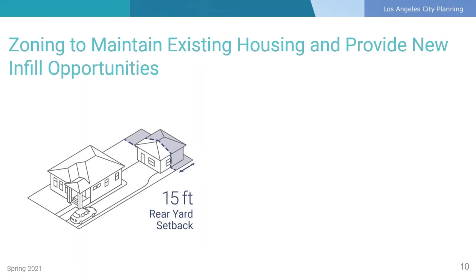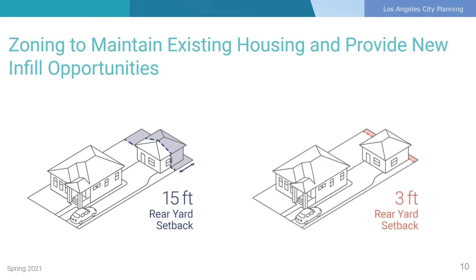Many residential properties in Boyle Heights are currently developed with a primary structure and a smaller secondary structure located close to or up to the rear property line. Under the existing zoning regulations, a 15-foot setback is required in most residential zones in Boyle Heights, making the existing structures at the back of these properties nonconforming. This makes it challenging to update the structure or to convert the structure into a residential use. Under the new draft zoning, the rear yard setback would be reduced to 3 feet, allowing for existing nonconforming structures to more easily be permitted or converted to residential units.